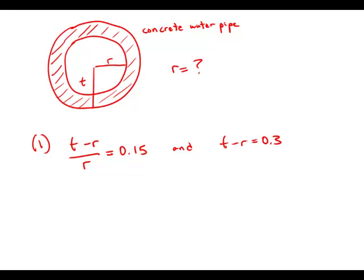When you have two equations for two unknowns, that means we are able to solve. And very important to remember on data sufficiency: you're not actually being asked to perform the calculation and actually solve. All you're being asked is, could you solve? And the answer is yes, we could solve here. So this statement by itself is sufficient.